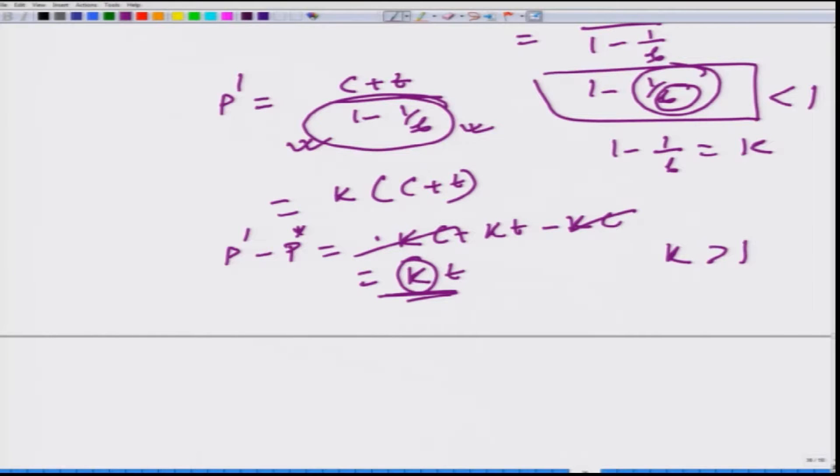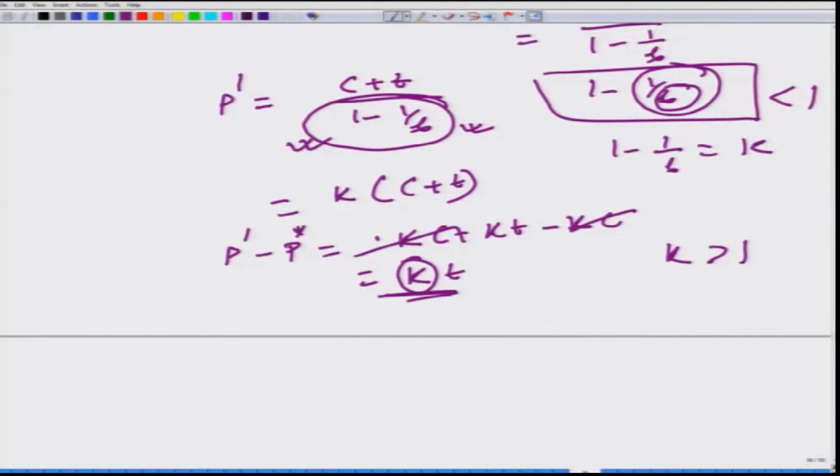So the result here for the monopolist depends on the demand curve, we have to be very clear about it. Unlike in the case of firms operating in the perfectly competitive market, we saw there also the price elasticity of demand plays a role. But there the tax is shared by the producer as well as the consumer, and whatever extra that producers pay or the consumers pay, it will always sum up to the tax imposed by the government. But what we see here is that producer is able to extract even more from the consumer and pass on the tax to the government. In this case t will go to the government and (k-1)t will remain with the monopolist.